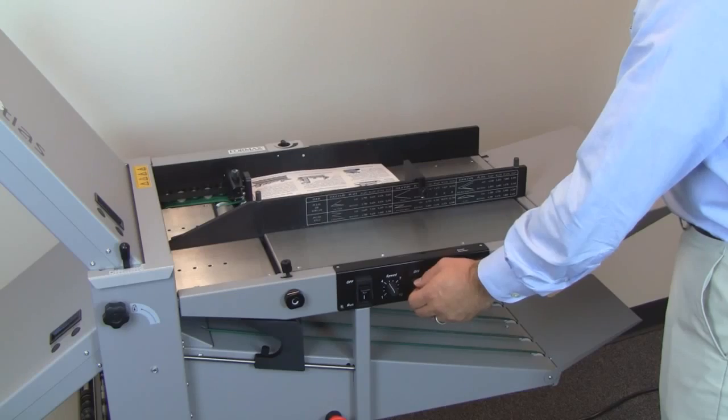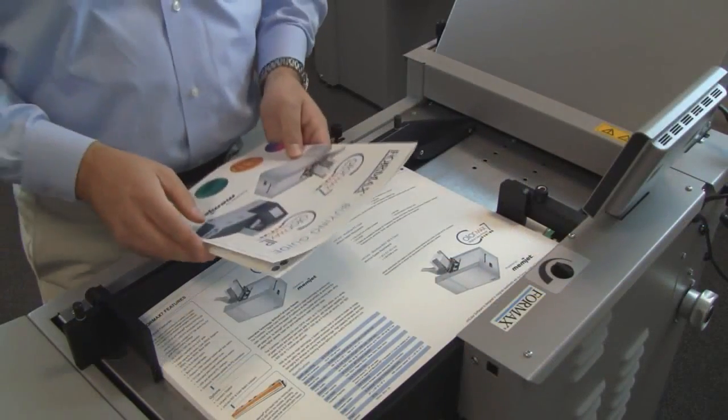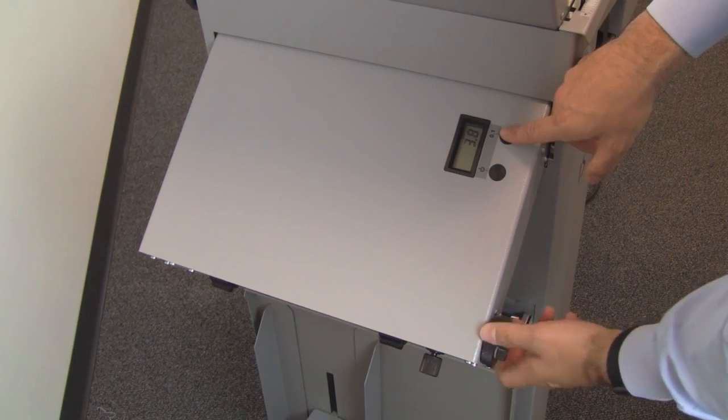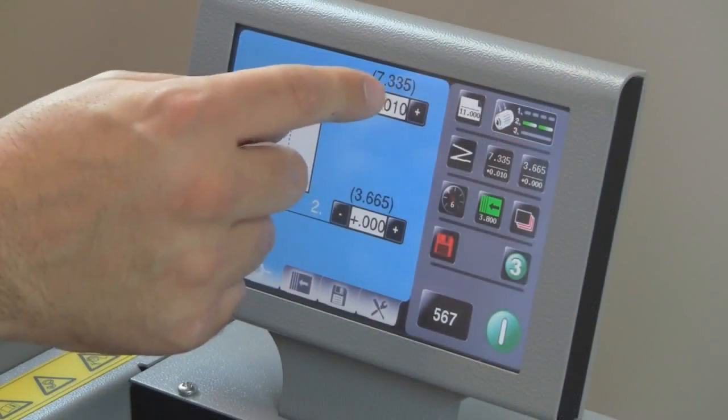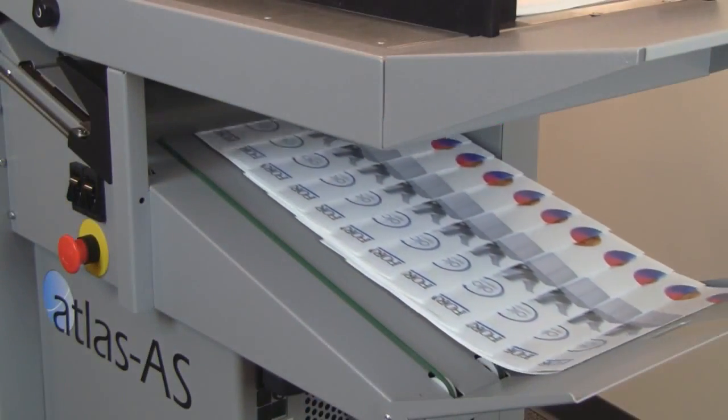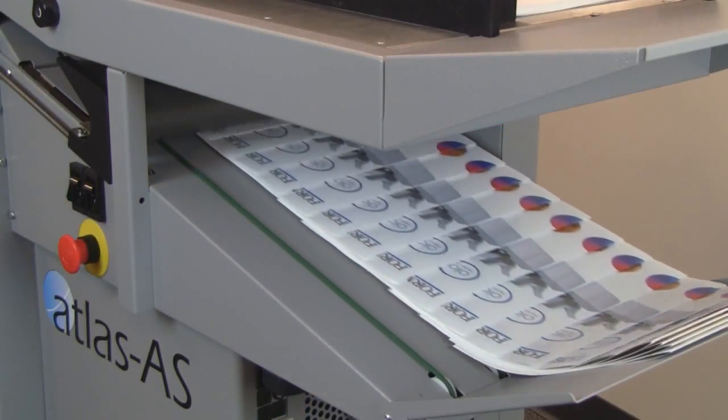The Atlas and Atlas AS each offer the same superior qualities and ease of setup. The difference between them is that the Atlas has manual fold settings, while the Atlas AS boasts all automatic settings for even more efficiency. Let's take a closer look at each model and how they work.